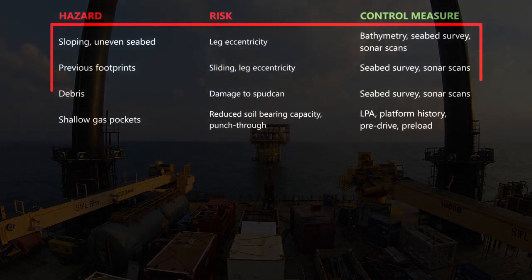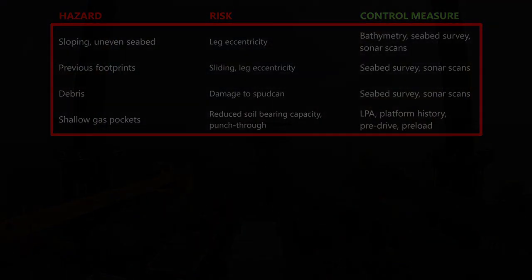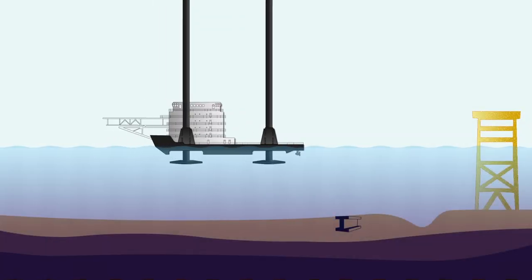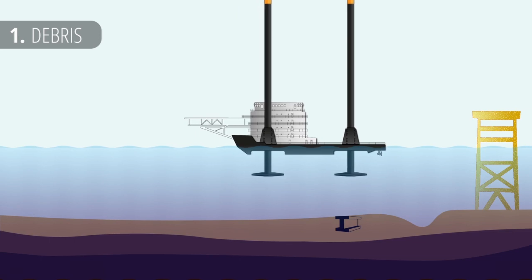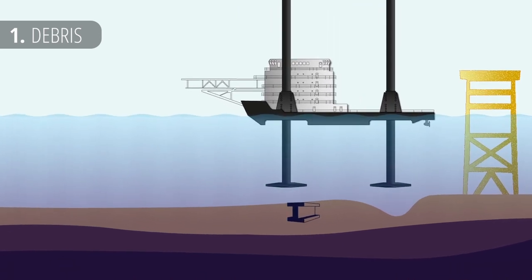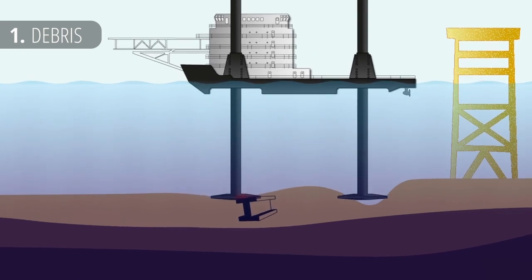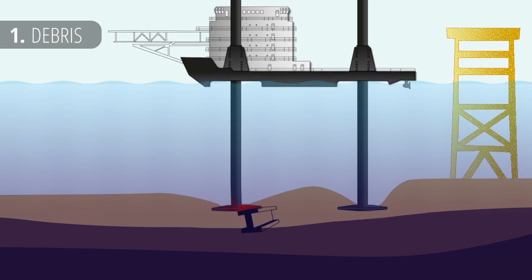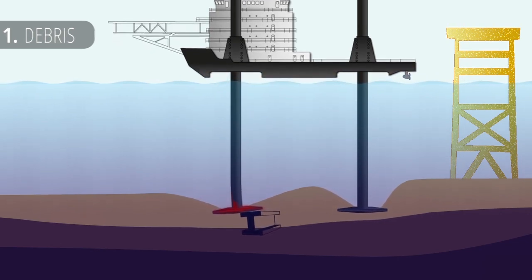We'll start with hazards related to seabed surface. The first thing we should look at are debris or any object on the seabed which could damage the spud can. Those could be natural formations like rocks or something like a steel beam or a lost anchor. Any such object should be detected by seabed survey and removed before jackup arrives on site.